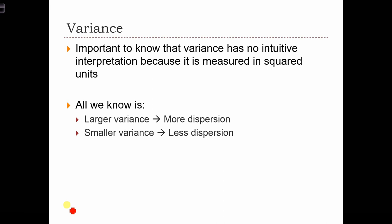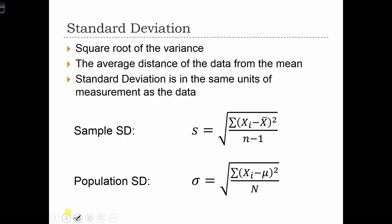What we really want is an intuitive understanding of what that dispersion means. The answer is simply to take the square root of the variance — we call this the standard deviation. If you recall that the variance was s squared, taking the square root gives us s, and s is the standard deviation of a sample.